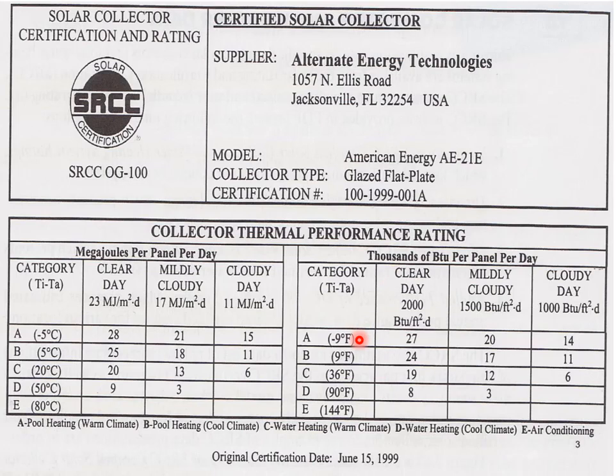Row A is for pool heating in a warm climate. The clear day is defined as 2000 BTUs per square foot per day. In this case the table gives us a value of 27000 BTUs per panel per day for pool heating in a warm climate.